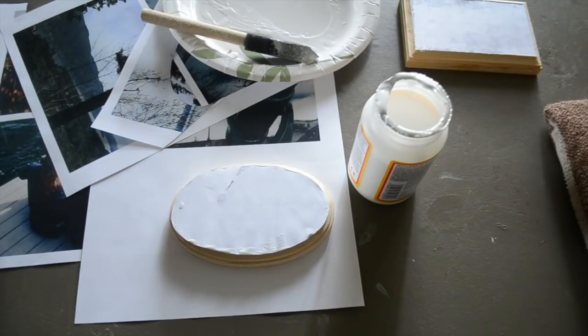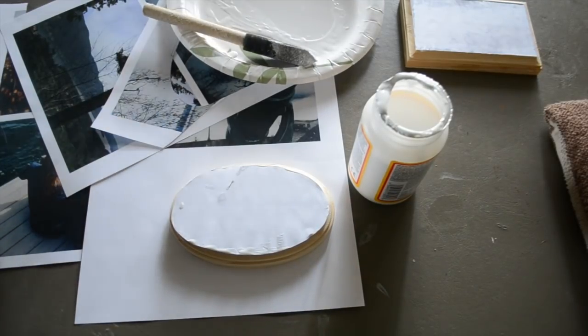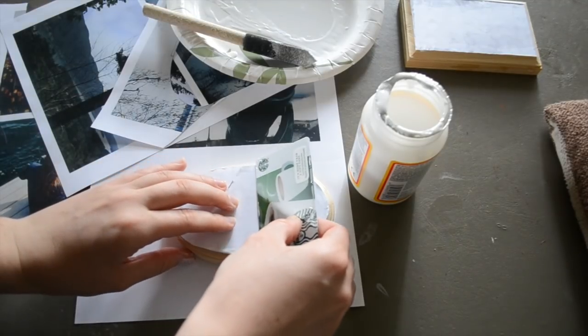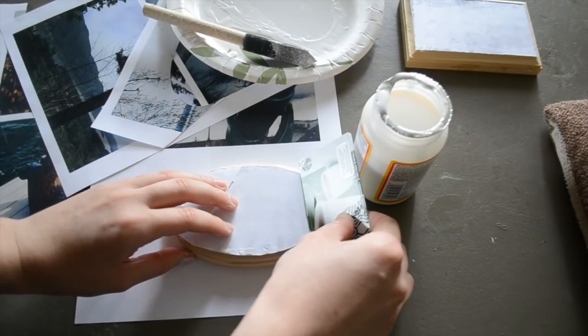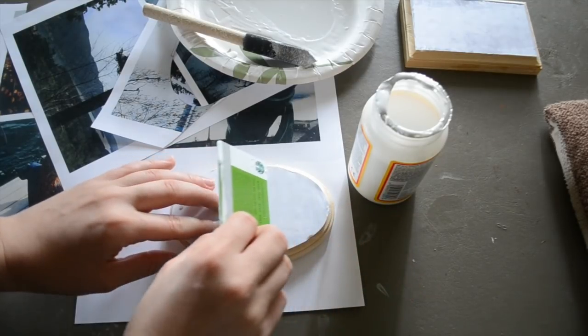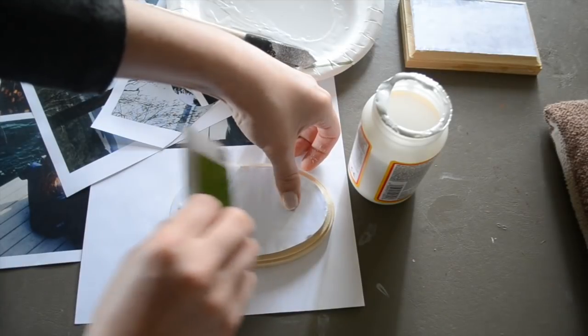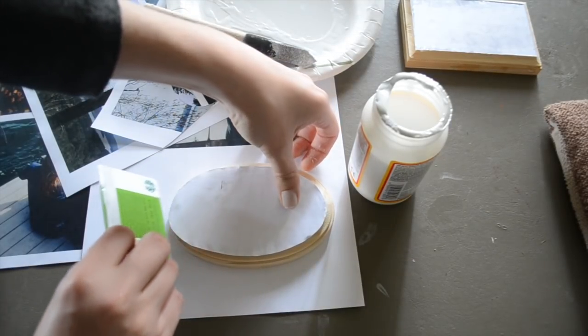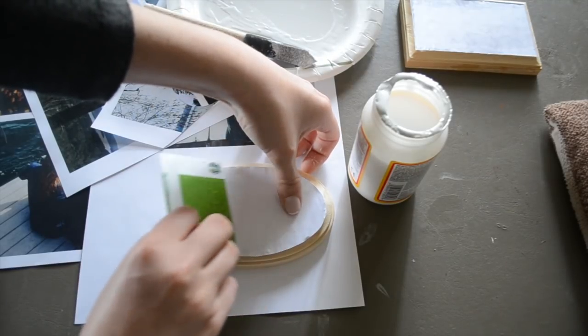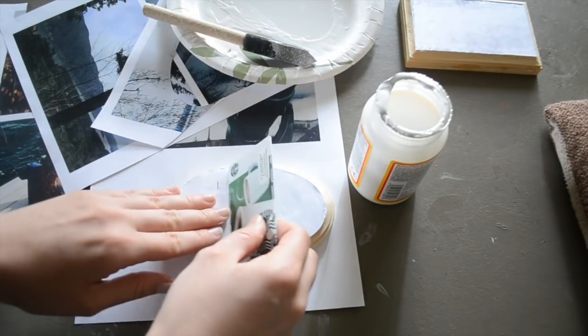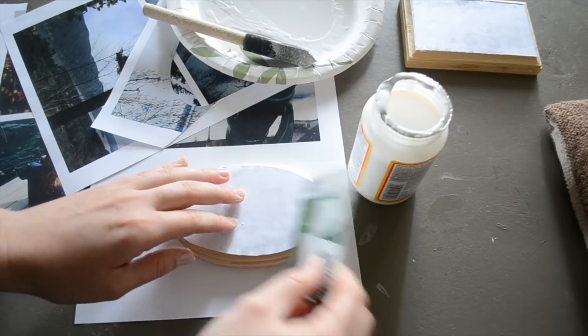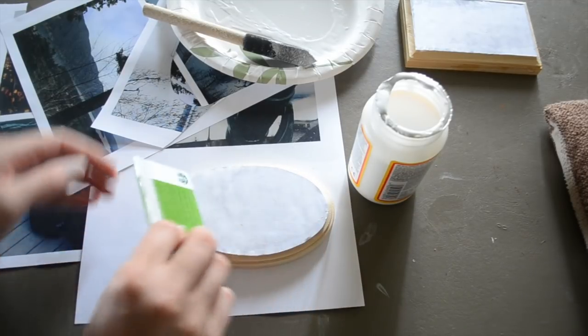Now the next step is removing air bubbles. I'm using just an old gift card that I have, and you're just going to gently slide it along the surface. This is going to get the paper nice and flat to the wood and make sure that your transfer doesn't get missed in any places. Some Mod Podge might come out of the side, that's totally okay.